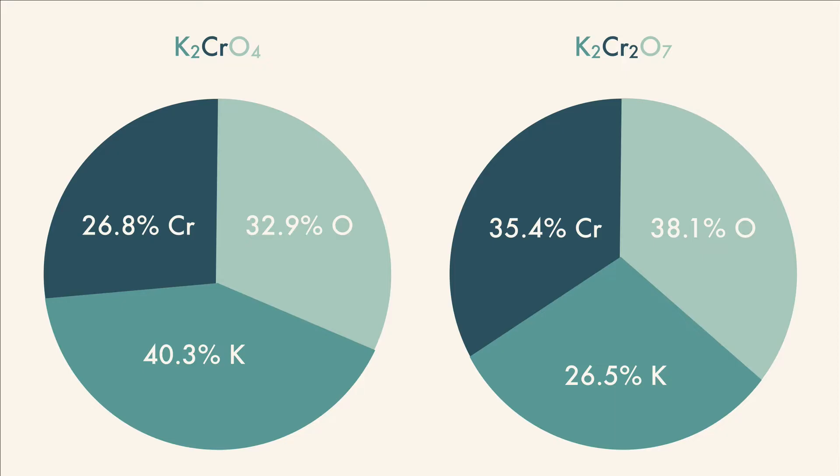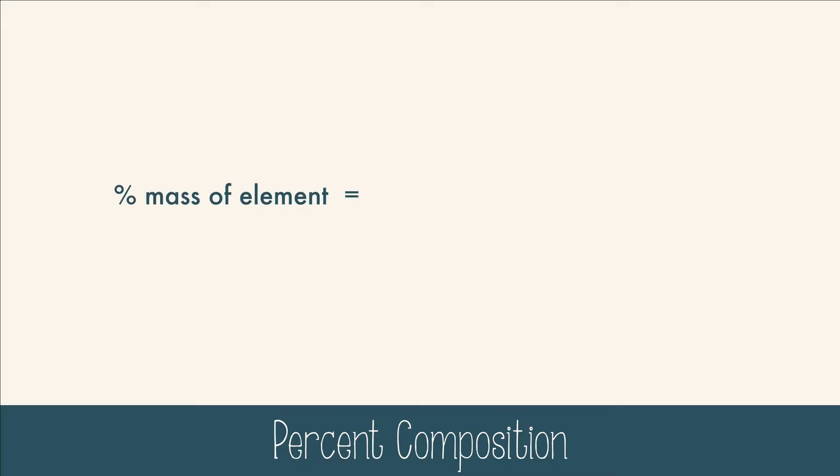We can calculate percent composition using this formula. The percent mass of an element equals the mass of the element divided by the mass of the compound times 100.